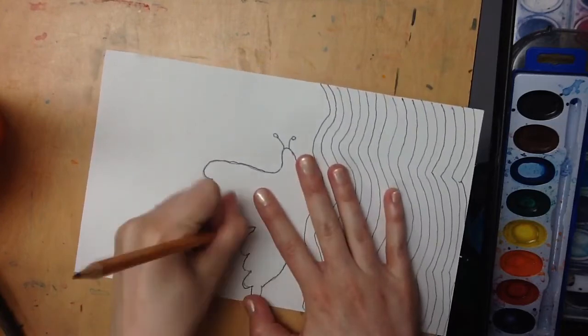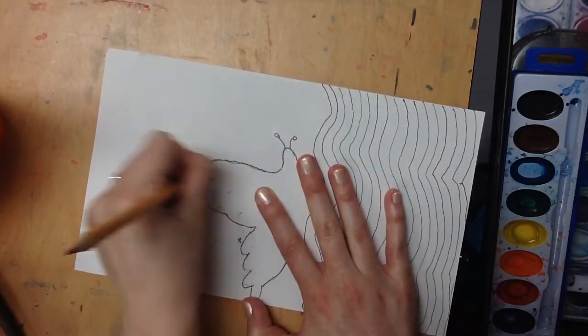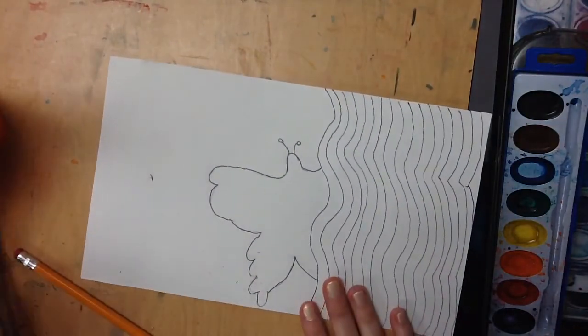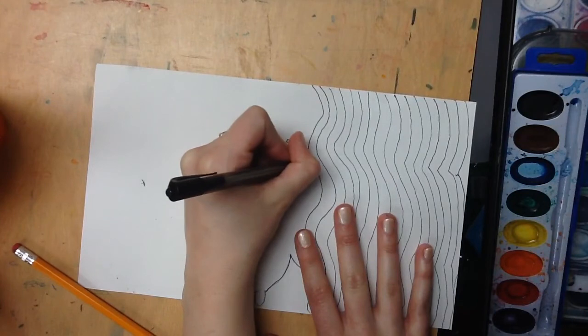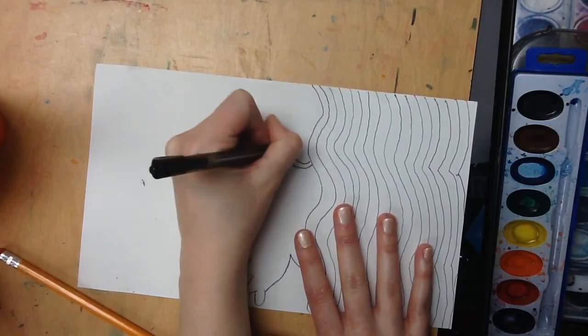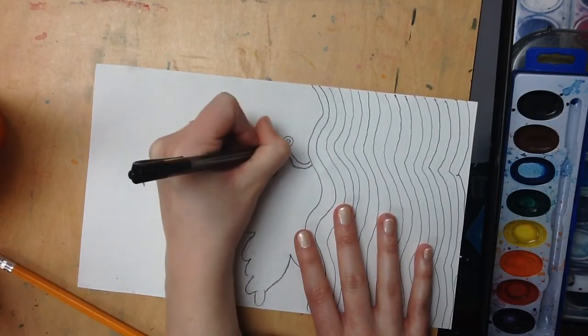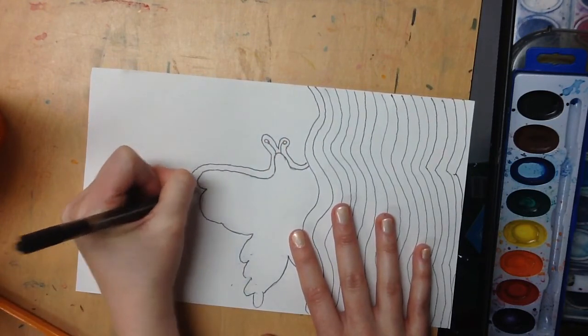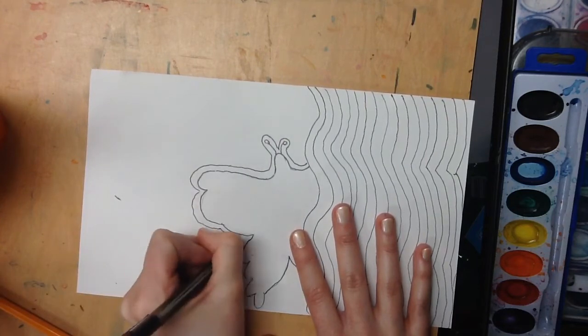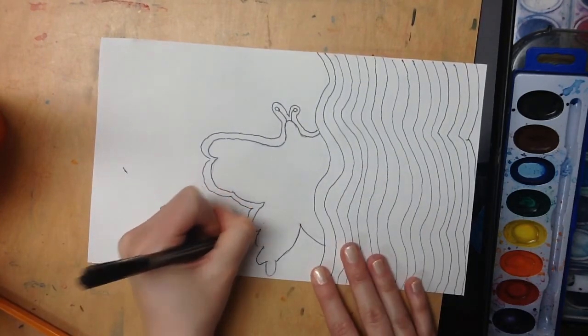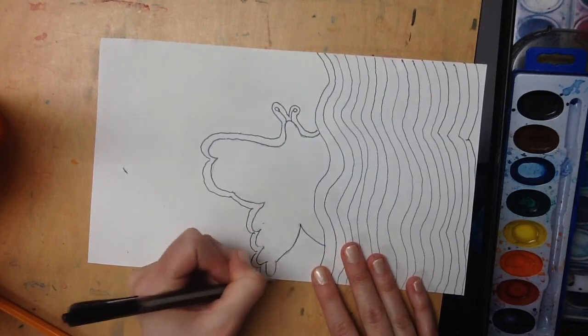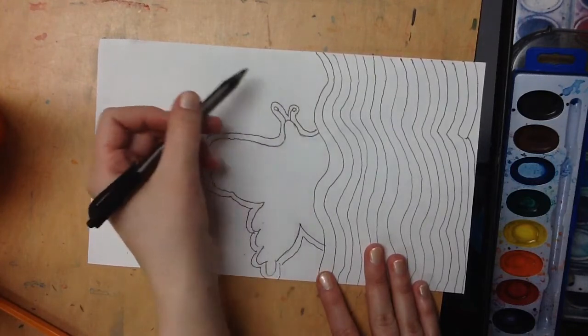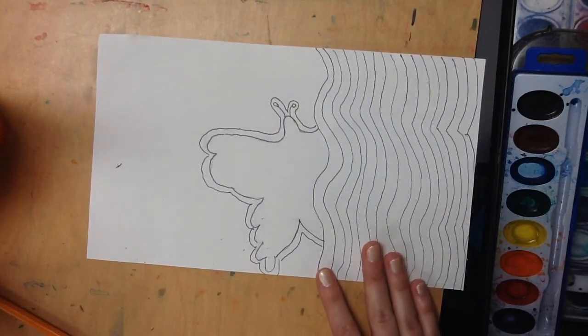The next step is to create lines coming off of the butterfly, and it needs to match the butterfly. So, you're pretty much outlining your shape like this. And then I'm going to just keep going and going and going until I run out of room.